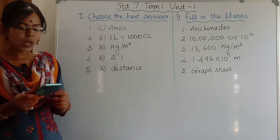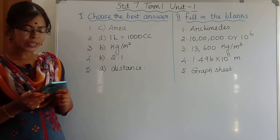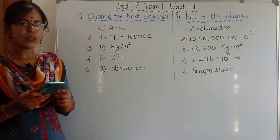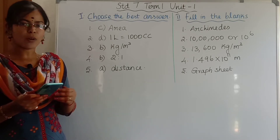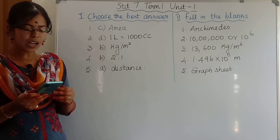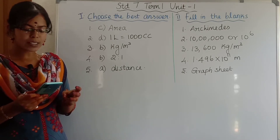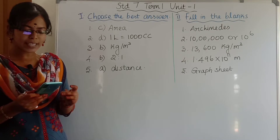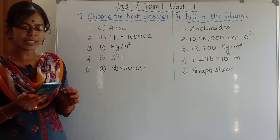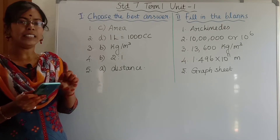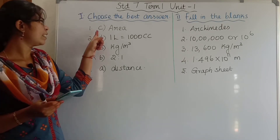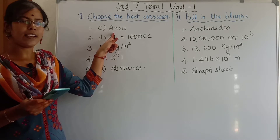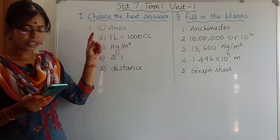First question: which of the following is a derived quantity? Option A: Mass. Option B: Time. Option C: Area. Option D: Length. The correct answer is Option C, Area. Area is a derived quantity.